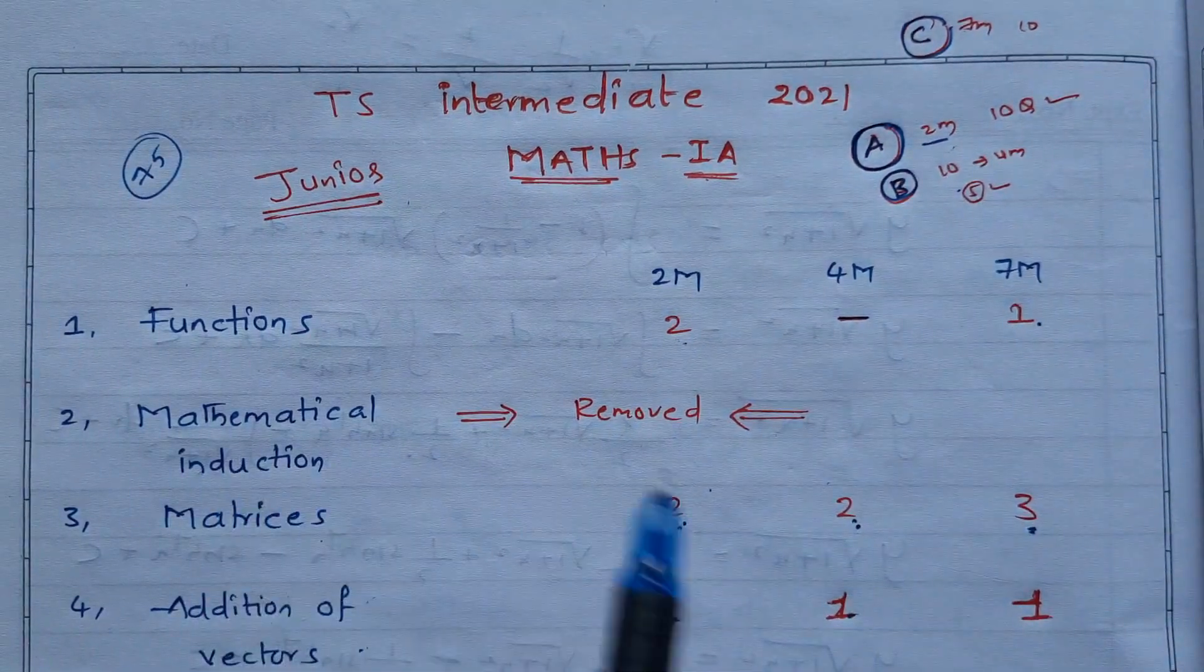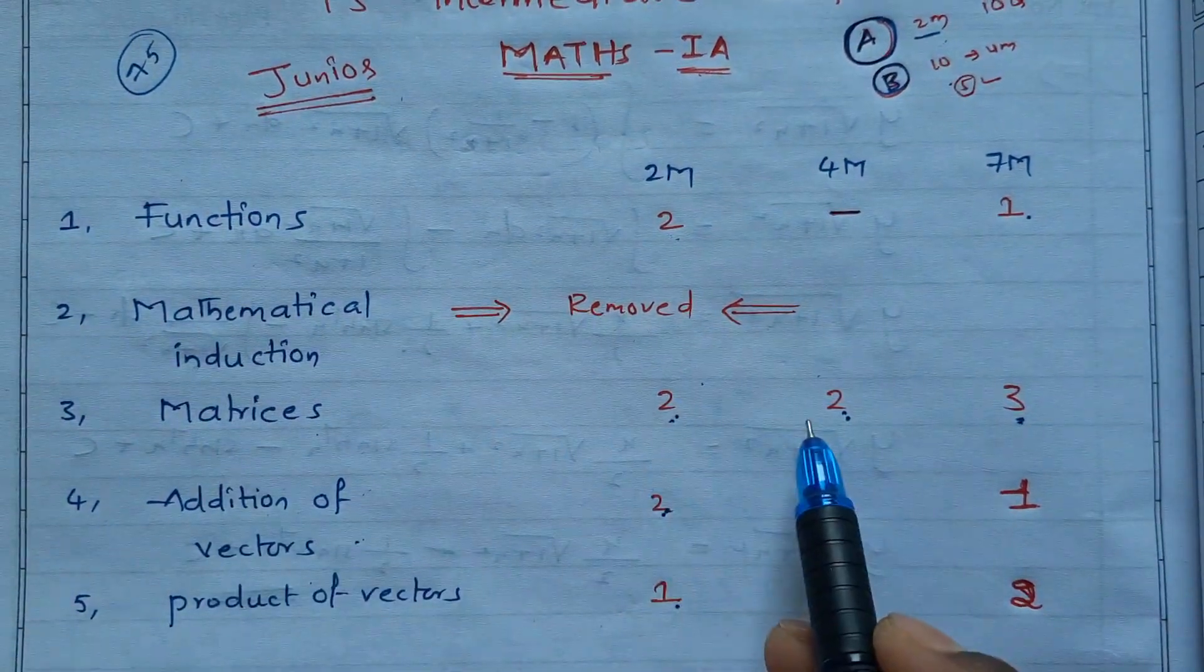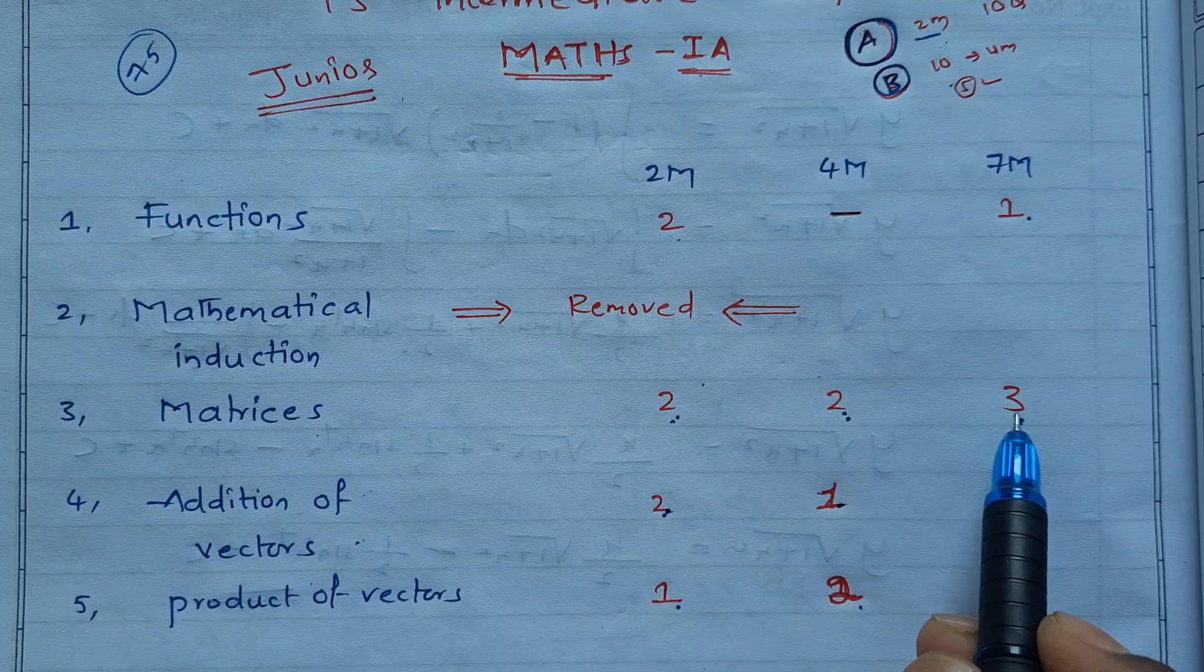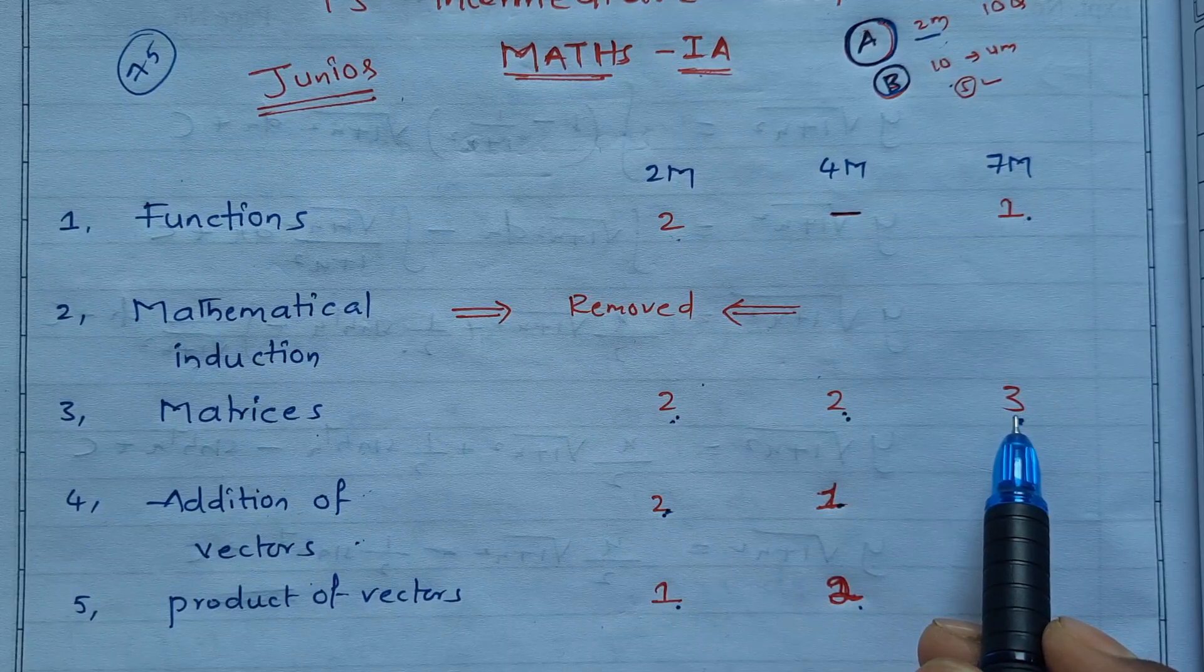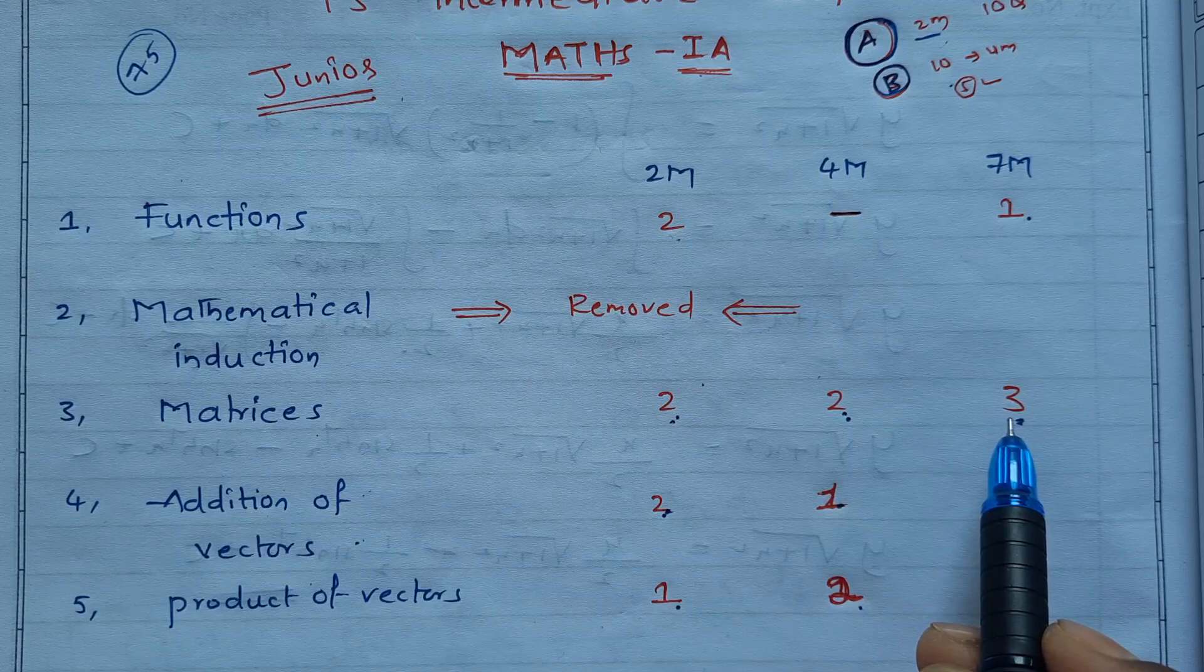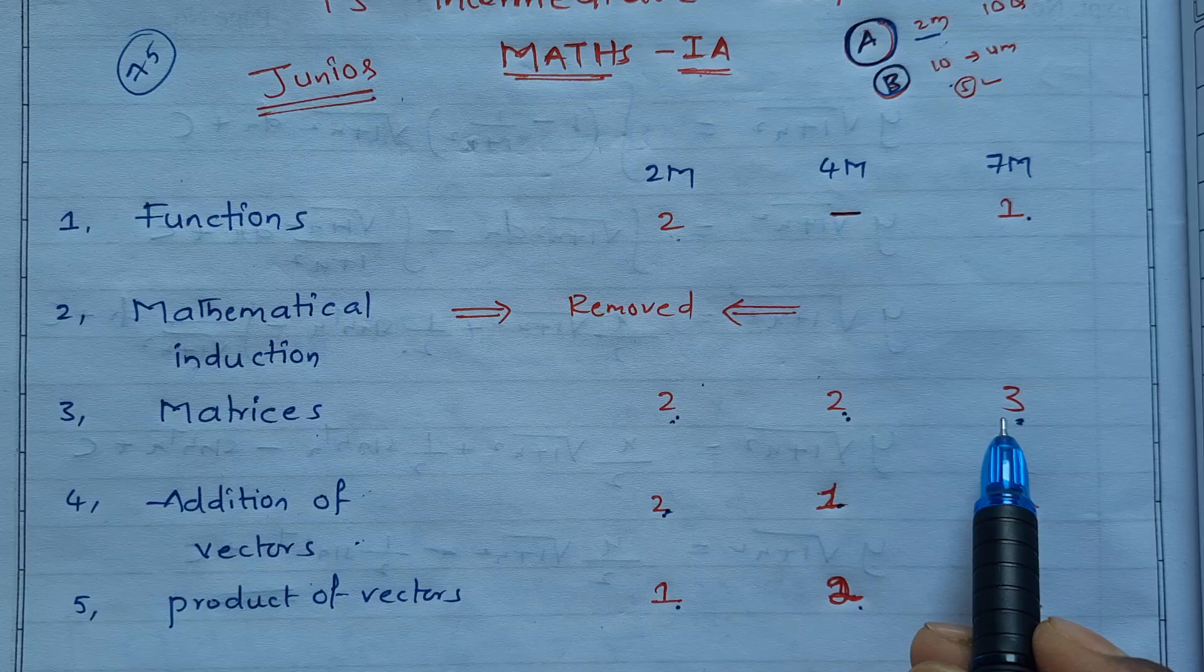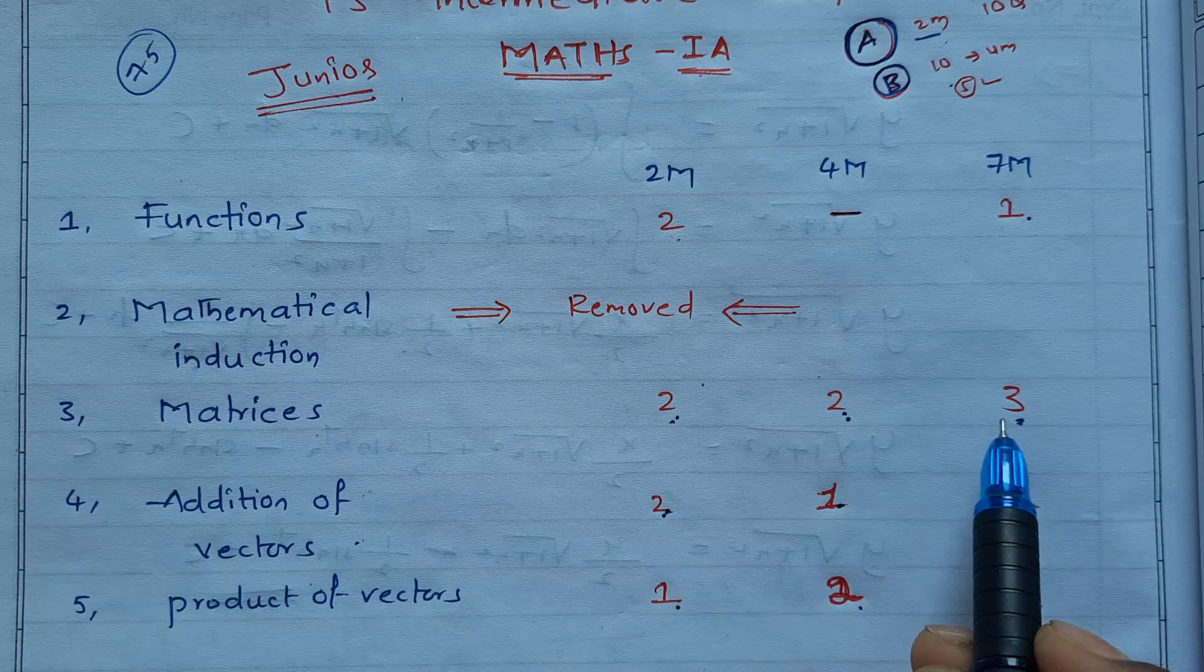Mathematical induction removed. Matrices - two two-mark questions, two four-mark questions, three seven-mark questions. One is Cramer's rule, another is inversion method, third one is A squared minus 5A plus 3, A^3 minus 5A^2 plus 3A plus I.